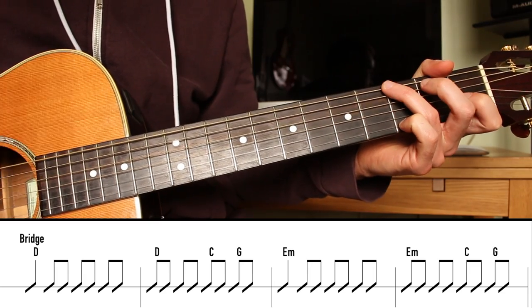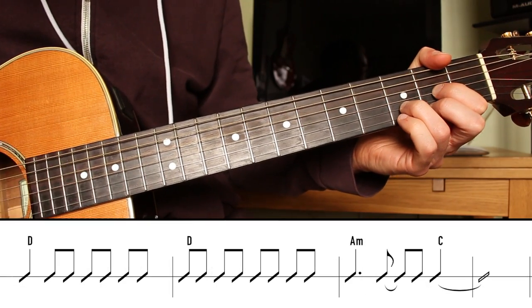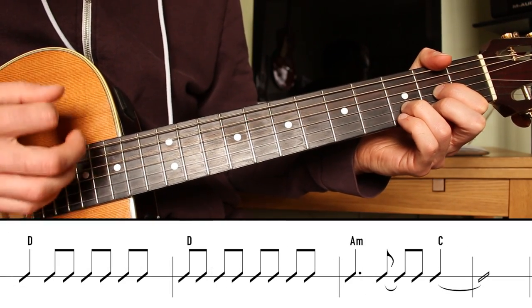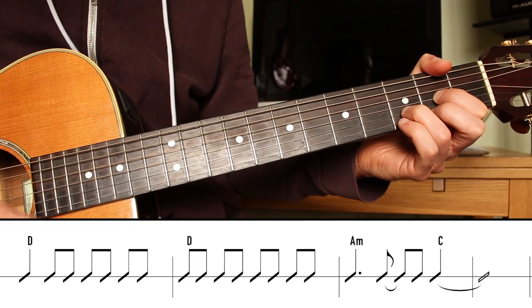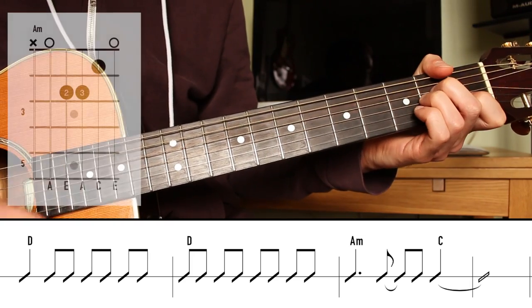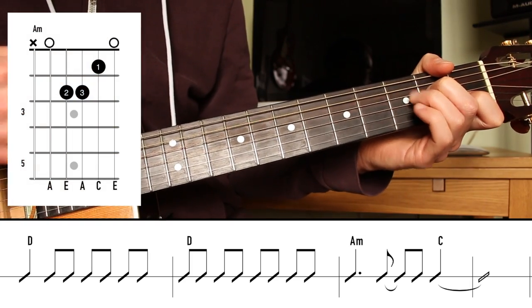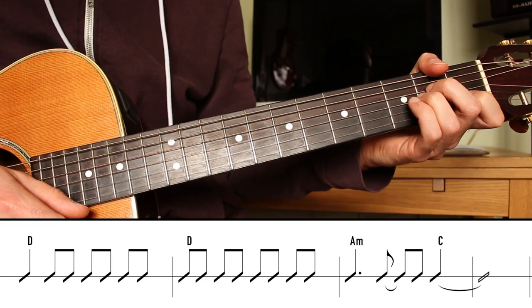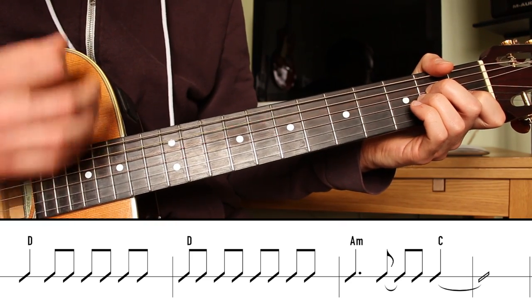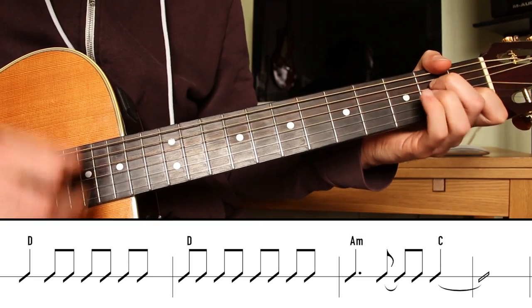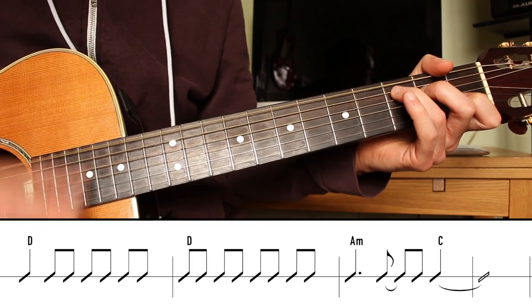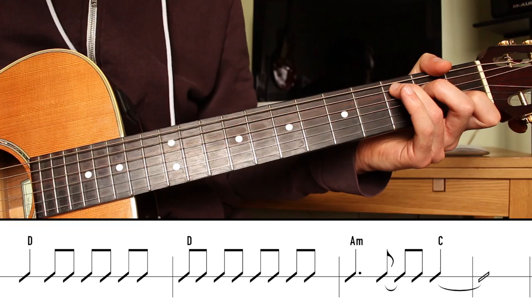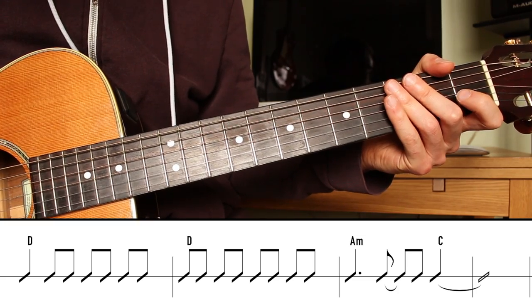Then C, and G, and D. 2, and 3, and 4, and D, and 2, and 3, and A minor. So in the A minor measure, it's 1, and 2, and 3, and 4, down, down, up, up, down. And then we hit the chorus again.